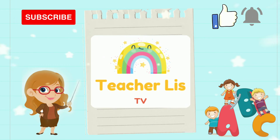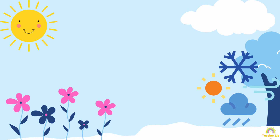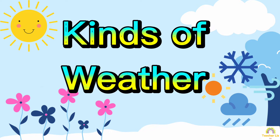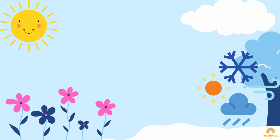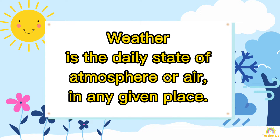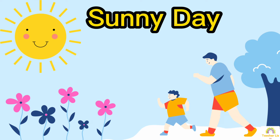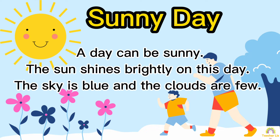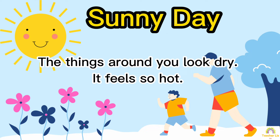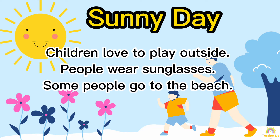Today we will learn about kinds of weather. Weather is the daily state of the atmosphere or air in any given place. A day can be sunny — the sun shines brightly, the sky is blue, and the clouds are few. The things around you look dry and it feels so hot.